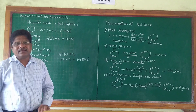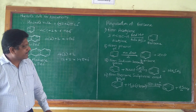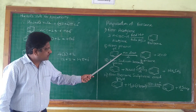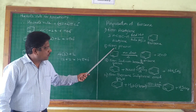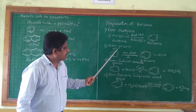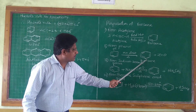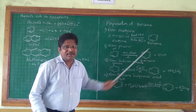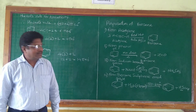The second method is from phenol. Benzene can be prepared from phenol. When phenol is heated in the presence of zinc dust, there is a reduction of the OH group. The OH group gets removed, giving benzene. The by-product is zinc oxide.